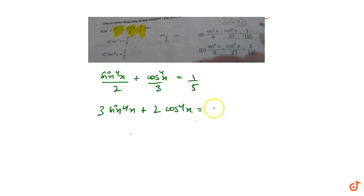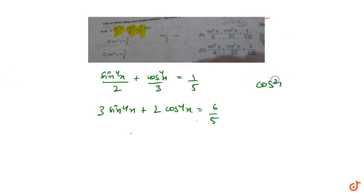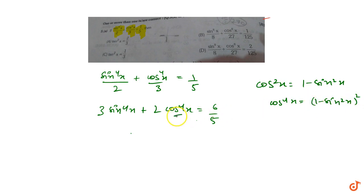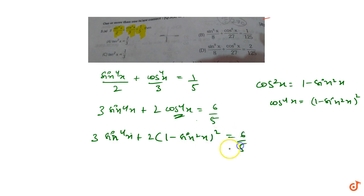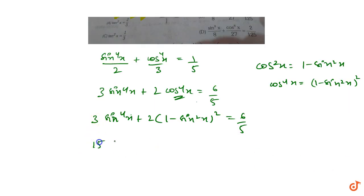We know that cos²x = 1 − sin²x and cos⁴x = (1 − sin²x)². So we write 3·sin⁴x + 2·(1 − sin²x)² equals 6/5, and multiplying through by 5 gives 15·sin⁴x + 10·(1 − sin²x)² = 6.